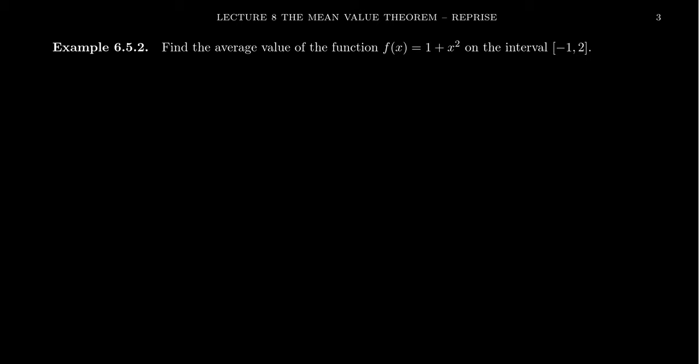So consider the function f of x equals 1 plus x squared. Let's find the average value of f on the interval negative 1 to 2. In terms of a formula, the average value of f, this will look like 1 over 2 minus negative 1 times the integral from negative 1 to 2 of f of x, which is 1 plus x squared, dx. That's all there is to it.